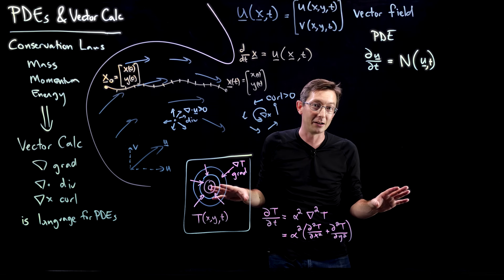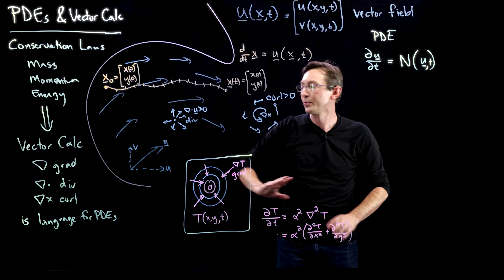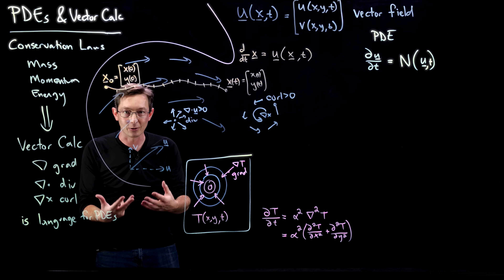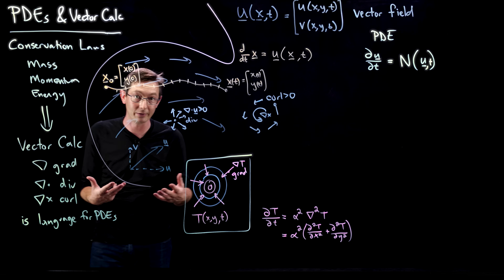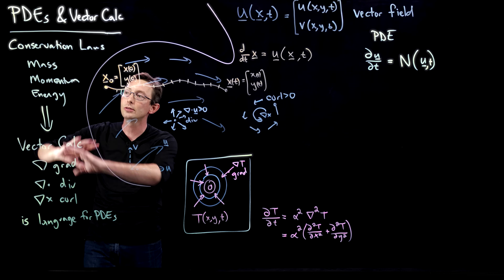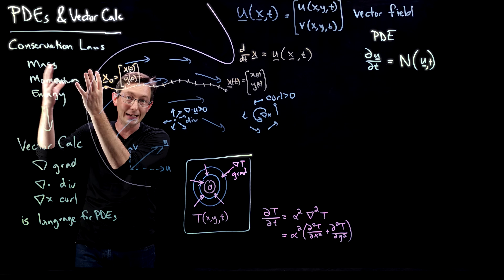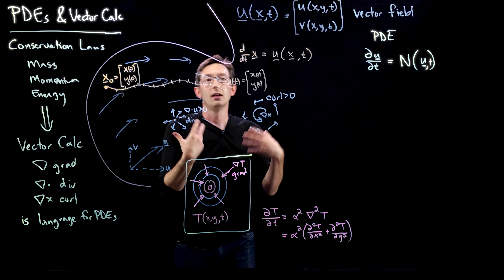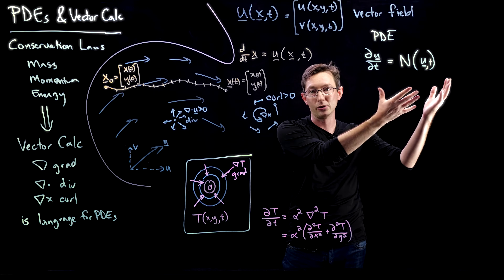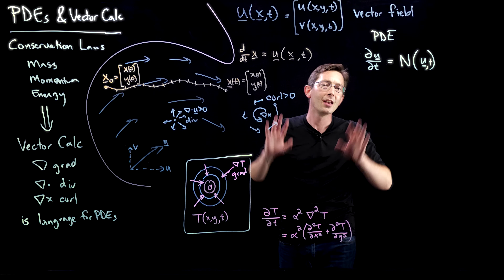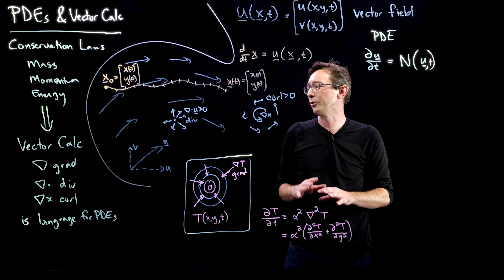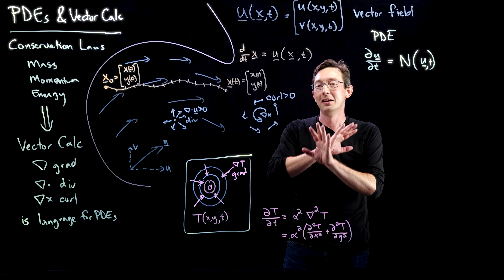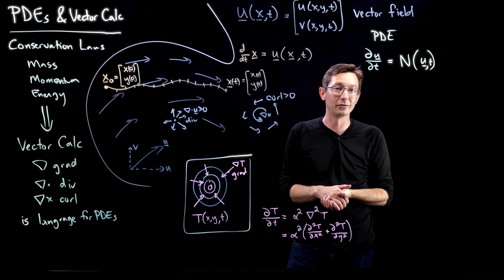We're going to start simple — with what these vector calculus terms mean — then learn Gauss's divergence theorem and Stokes's theorem, and use those to encode conservation of mass, momentum, and energy to derive PDEs for real physical systems like Navier-Stokes, the heat equation, and mass continuity. This is how I wish I had learned vector calculus and PDEs. Stay tuned and keep watching — thank you.